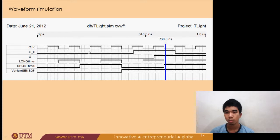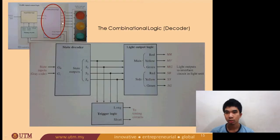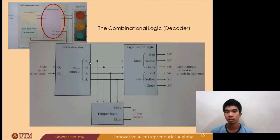Remember that G0 and G1 are our outputs, which will go to the combinational logic. What really happens is that these outputs will direct to the output signals: S1 is the green light at the side, and the other output also helps to produce the light for the main street and side street.